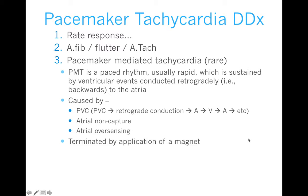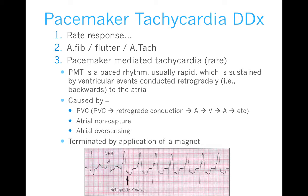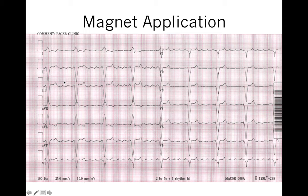There is another form called pacemaker-mediated tachycardia — also called endless loop tachycardia — caused by ventricular pacing and retrograde conduction across the AV node, leading to atrial sensing, then ventricular pacing again. This could be stopped by applying a magnet, and simple reprogramming can prevent recurrence. In this particular case, a magnet is applied and we see that the patient is in atrial flutter underneath — the pacemaker is sensing the atrial flutter and pacing rapidly in response. A function called mode switch can allow the pacemaker to switch to single-chamber pacing and ignore those flutter waves.